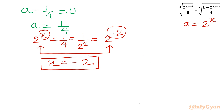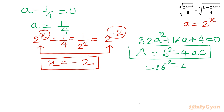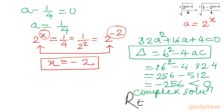For the second equation 32a² + 16a + 4 = 0, let us check the discriminant. Δ = b² - 4ac = 16² - 4 · 32 · 4 = 256 - 512 = -256. Because the discriminant is negative, this equation generates only complex solutions. So we reject this quadratic for real solutions.